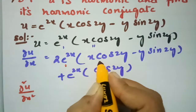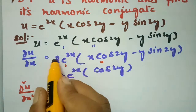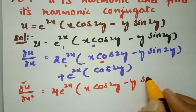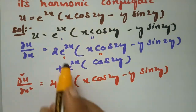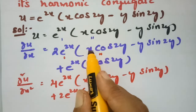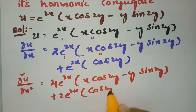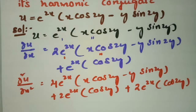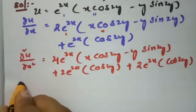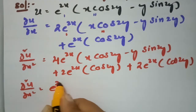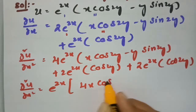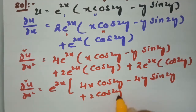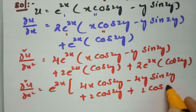Differentiating again with respect to x for ∂²u/∂x²: the first function gives 4·e^(2x) times (x·cos2y − y·sin2y), then leaving the first as 2·e^(2x) and differentiating the second gives cos2y. So ∂²u/∂x² = e^(2x) times (4x·cos2y − 4y·sin2y + 2cos2y + 2cos2y).